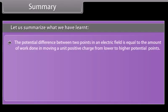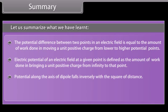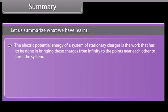Summary. The potential difference between two points in an electric field is equal to the amount of work done in moving a unit positive charge from lower to higher potential. Electric potential at a given point is defined as the work done in bringing a unit positive charge from infinity to that point. The potential along the axis of a dipole falls inversely with the square of distance. An equipotential surface is the locus of points at which the potential due to a charge distribution is the same. The electric potential energy of a system of stationary charges is the work done in bringing these charges from infinity to form the system.